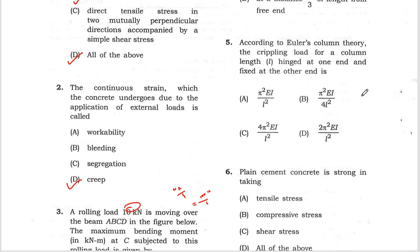Question number 5: According to Euler's column theory, the crippling load for a column hinged at one end and fixed at the other end has effective length L by root 2. The formula is π² EI divided by L effective square, which gives us 2π² EI by L square.